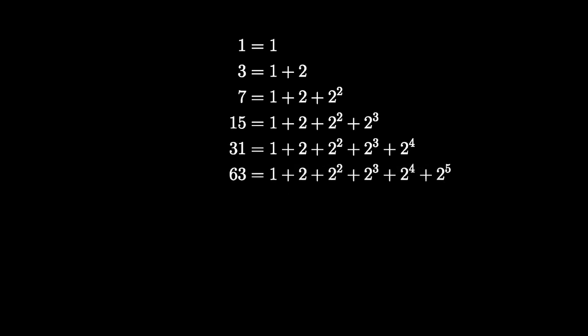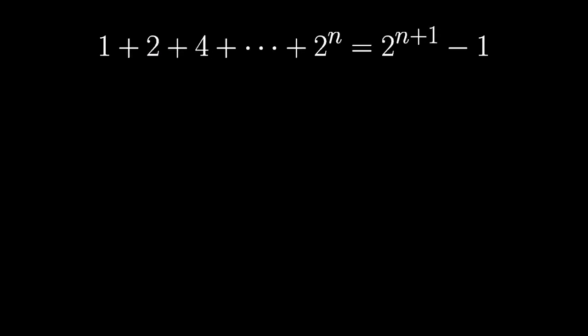First, to clean things up, notice what you get when you cut off the sum at finite points. One, three, seven, fifteen, thirty-one. They're all one less than a power of two. In general, when you add up the first n powers of two, you get two to the n plus one minus one, which this animation hopefully makes clear.